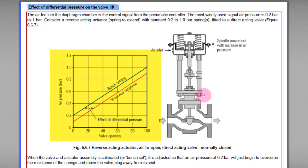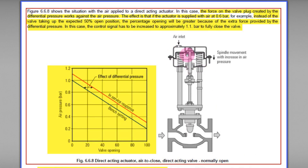Don't be confused about the actuator and the valve body. This part is the actuator and this part is the valve body. When we talk about a control valve, we usually refer to the whole assembly. This is a direct acting actuator — we know because the instrument air is supplied to the top of the actuator.